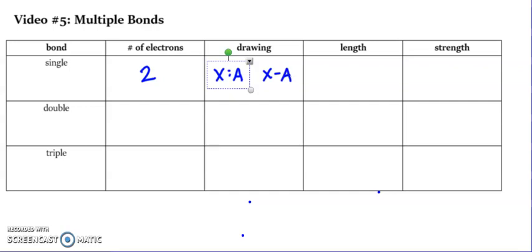Double bonds then would be made up of four electrons. You've got now two from each atom. Here where you could have X gives its two and maybe A gives its two. This would be one way to draw a double bond or you could draw two lines because remember one line is the same as two dots.